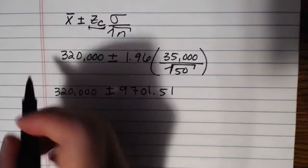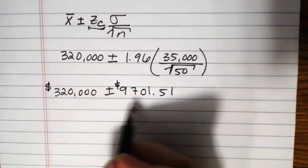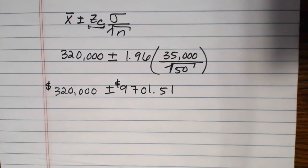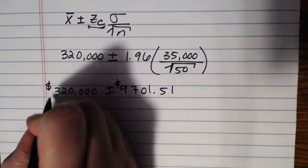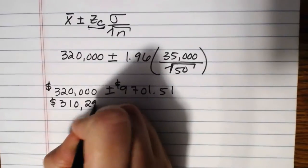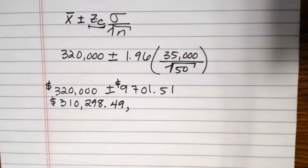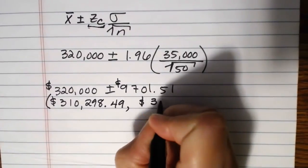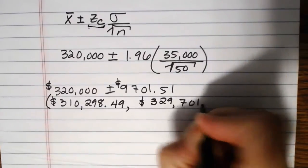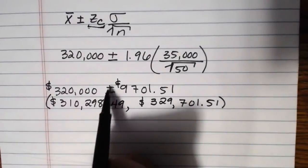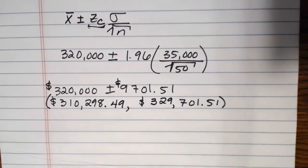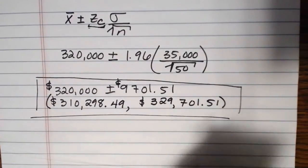And then if we crunch that through, 1.96 times 35,000 over the square root of 50, that gives us $9,701.51 roughly. So we're looking at $320,000 plus or minus that. So then if I want to convert this, the other format that you'll see used is actually to take that $320,000 and subtract the $9,701.51 to get a low end estimate of $310,298.49. And on the high end, we would take the $320,000 and add the $9,701.51 to get $329,701.51. So there's our interval.